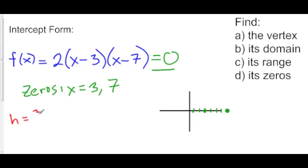if you didn't know that, then you could just take the average of 3 and 7. 3 plus 7 over 2. That's 5. Now that we have the x value of the vertex,